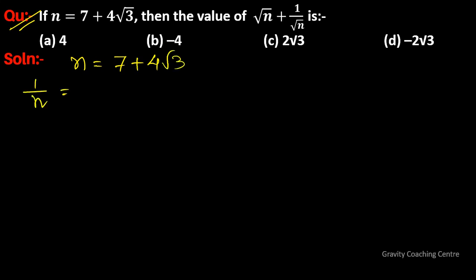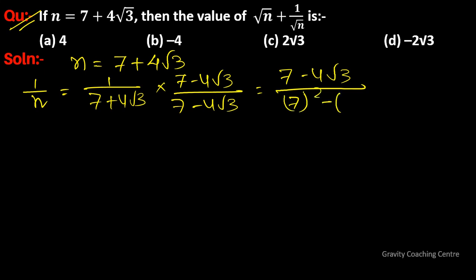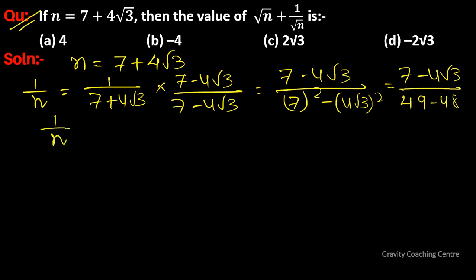Now we find its reciprocal: 1 upon n equals 1 upon (7 plus 4 root 3). After rationalizing, we get 7 minus 4 root 3 upon (7 squared minus (4 root 3) squared), which equals 7 minus 4 root 3 upon (49 minus 48). So 1 upon n is equal to 7 minus 4 root 3.